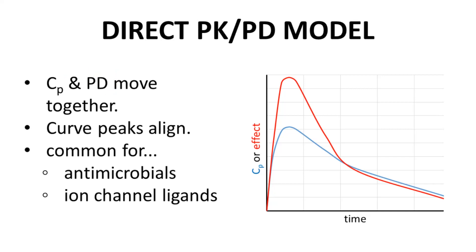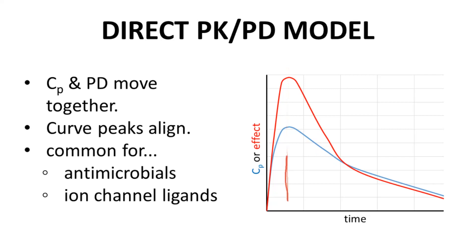We can see this in the graph to the right. The x-axis is time; the y-axis is either CP or effect. We can see that as the CP time curve in blue rises, the effect time curve also rises. As the CP time curve falls, effect also falls. The peaks of both curves align on the x-axis.